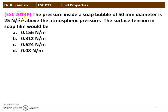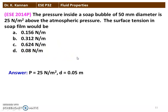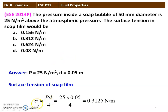The next question from the 2014 question paper: the pressure inside a soap bubble of 50 mm diameter is 25 N/m² above atmospheric pressure. The surface tension inside the soap film would be? Options: 0.156, 0.312, 0.624, or 0.08 N/m. We calculate using σ = P × D / 4: σ = 25 × 0.05 / 4 = 0.3125 N/m. So the correct option is B: 0.312 N/m is the surface tension of the soap film.